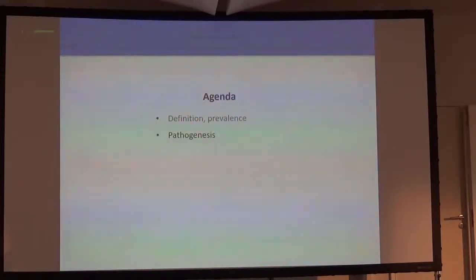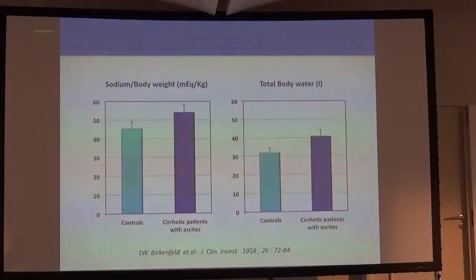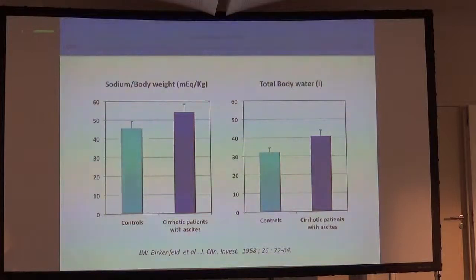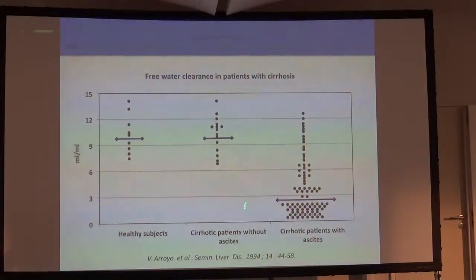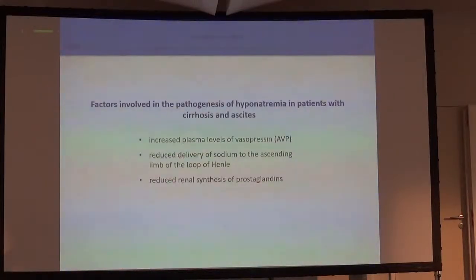Let me briefly address the pathogenesis, because here the problem is not a defect in sodium body content. The problem is an excess in total body water. This is related to the fact that patients with decompensated cirrhosis are not able to produce and to eliminate free water. So the clearance of free water is much lower compared to healthy subjects.